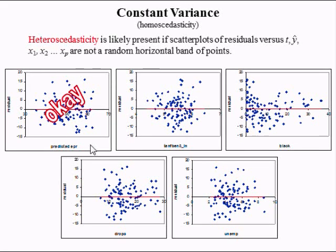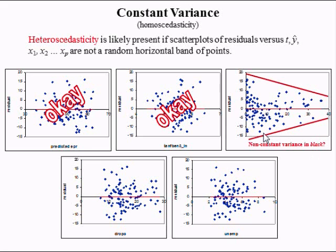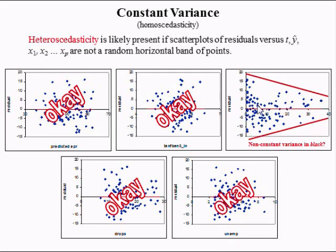That looks okay — that's what you want it to look like. Here we have the residual versus the natural log of x1, the 10th benefit for a family of three in log form, and that one looks okay. Here we have the residual versus the share of the population that is black. As that share increases, the variance in the residuals looks like it's getting smaller and smaller. So this variable might be a problem. Down here we have the residual versus the high school dropout rate, which looks pretty good, and here we have the residual versus the unemployment rate, which also looks pretty good.